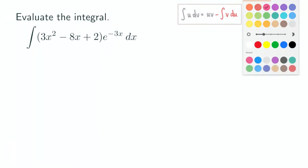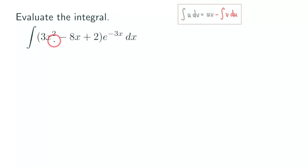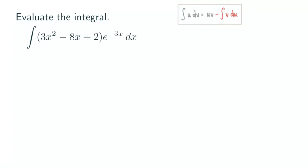We are going to use integration by parts for this problem. We are going to set up our u, v, du, and dv table. We are going to let u be the polynomial, so u equals 3x squared minus 8x plus 2. And our dv will be e to the negative 3x dx.